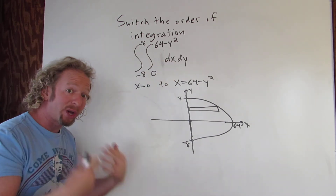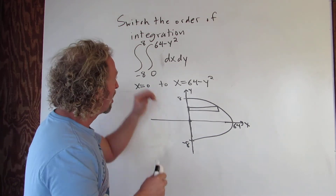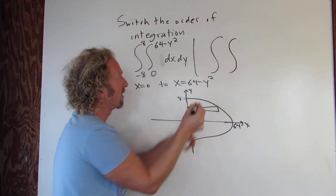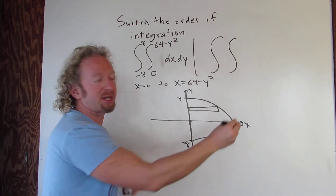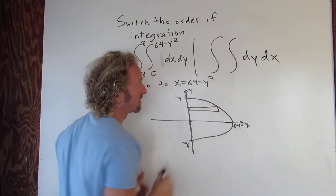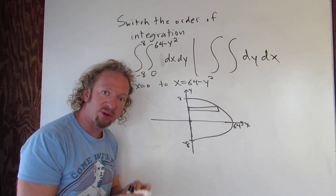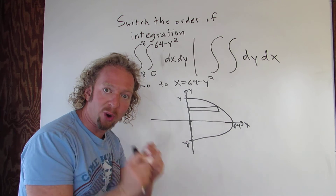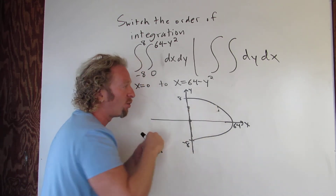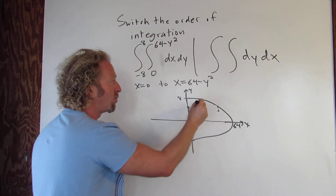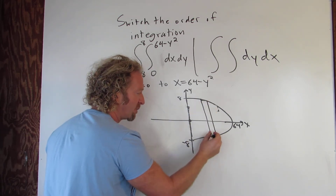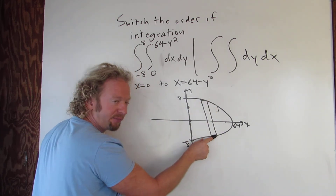We want to switch the order of integration so that dy comes first and then dx. So first we want to integrate with respect to y, which means we're thinking of y as a function of x. That means we need vertical rectangles.